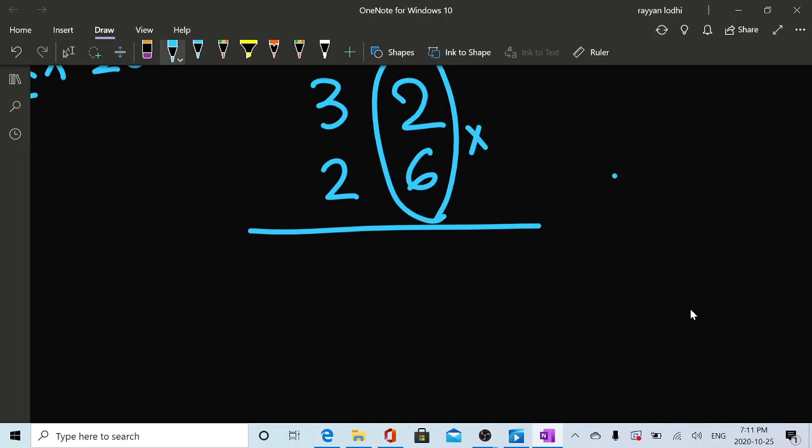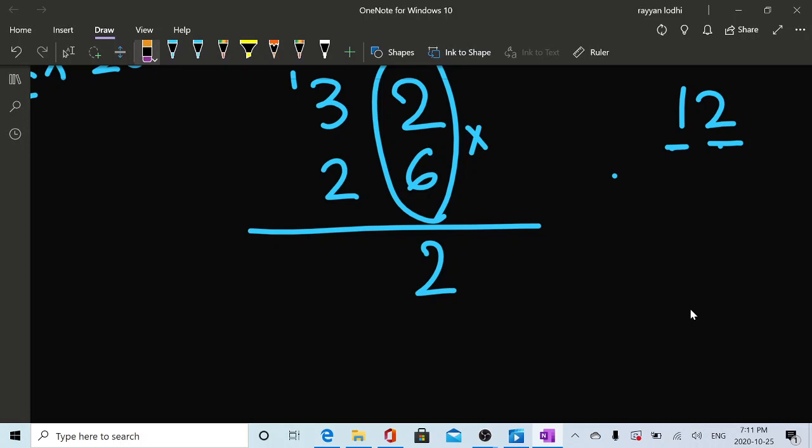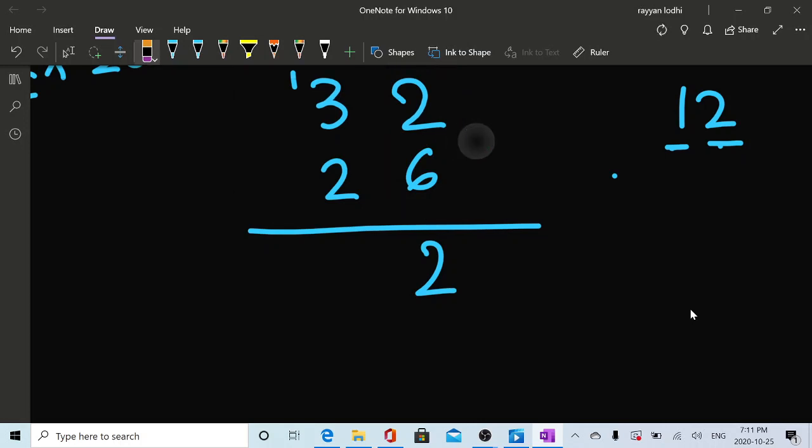Six times two is 12. In this 12, pick this two, write it here, write it into ones. And this one goes on top of the three. Now, after this, pick the same six and multiply now this six with this three.